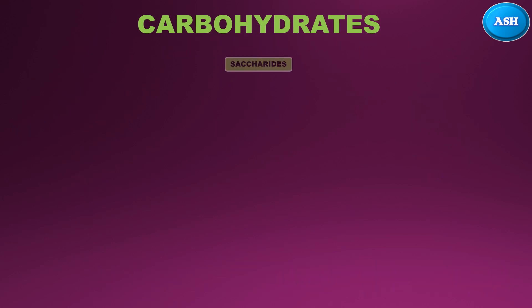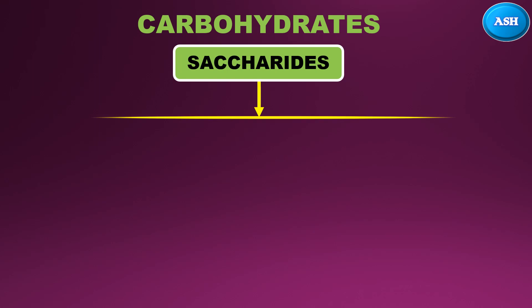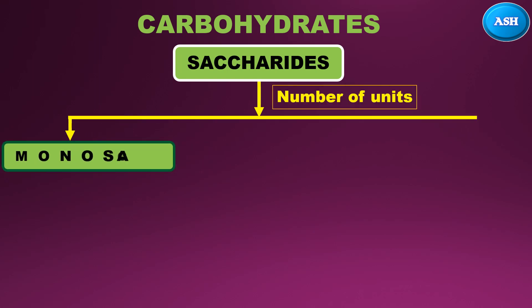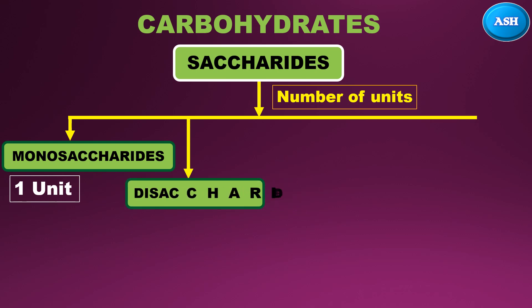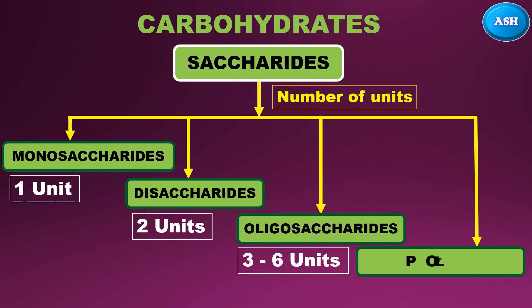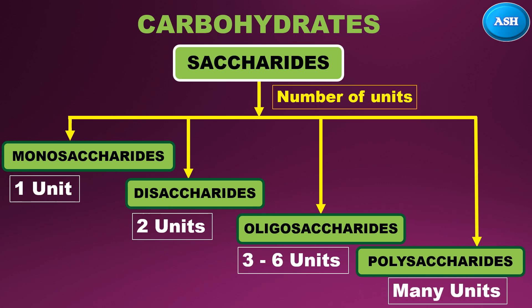Another name for carbohydrates is saccharides, which means sweet taste. Saccharides are divided based on number of units: first is monosaccharides which is one unit, second is disaccharides which is two units, third is oligosaccharides which is three to six units, and last is polysaccharides which is of many units. Let's briefly go through all four types.